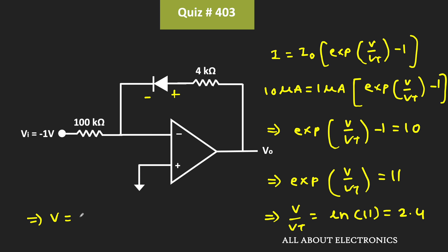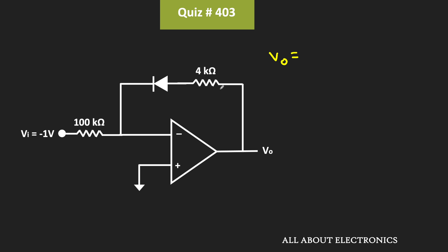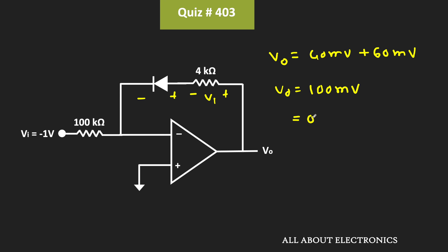From this, the voltage across the diode Vd is equal to 2.4 times Vt, where Vt = 25mV. That means the voltage across the diode is roughly equal to 60mV. So now the output voltage Vout is equal to the voltage drop across the 4kΩ resistor plus the voltage drop across the diode. V1 is equal to 40mV, and the voltage drop across the diode is equal to 60mV. That means the output voltage is equal to 100mV, or 0.1V.